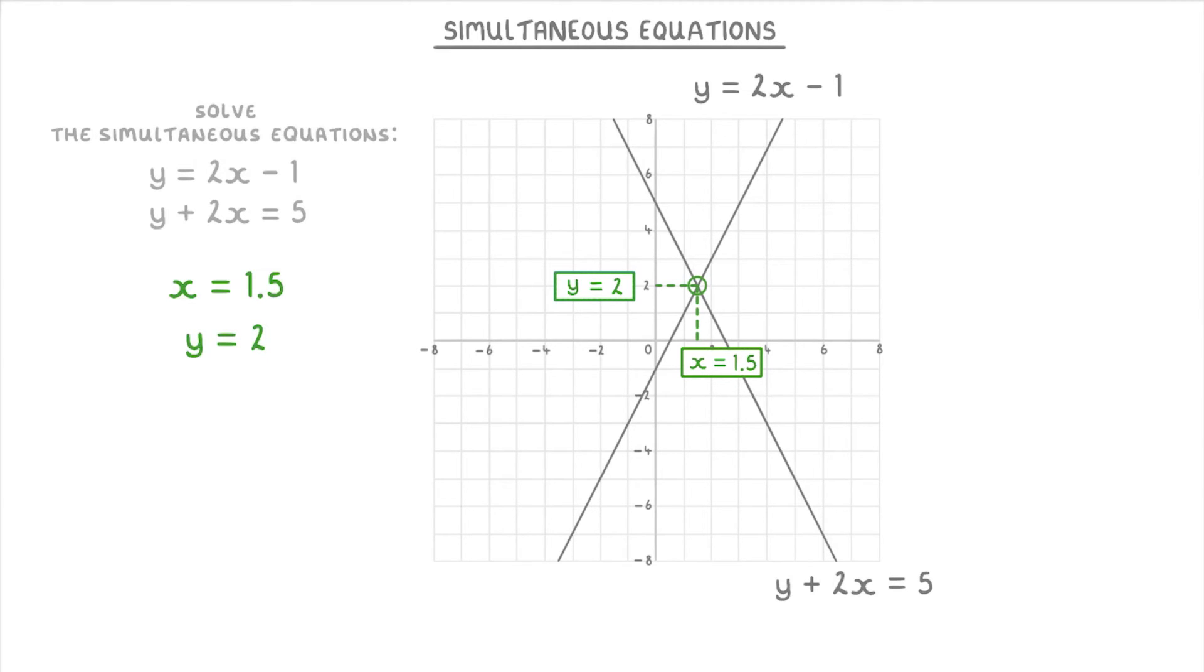So the answer to this question would be x equals 1.5 and y equals 2, because that's the only solution that both of these equations have in common. So whenever you try to solve simultaneous equations, all you're doing is trying to find that pair of x and y values that are solutions for both of the equations. And that's why we call them simultaneous equations, because it's a solution for both of the equations at the same time, so simultaneously.